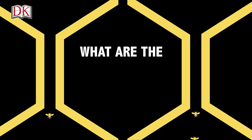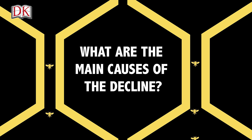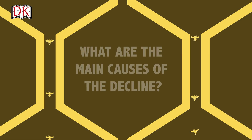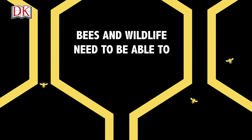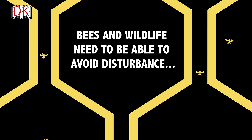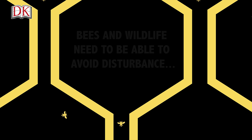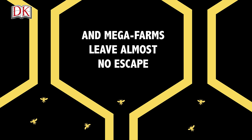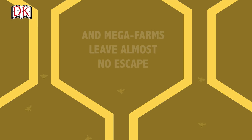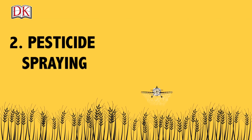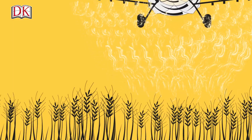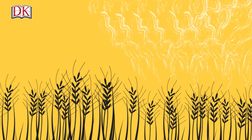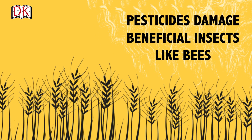So what are the main causes of the decline? Well, there are lots of contributing factors. The first is megafarming. Bees and other wildlife need to be able to avoid disturbance, and megafarms leave almost nowhere to hide. Another is pesticide spraying. When used indiscriminately, it damages beneficial insects like bees.